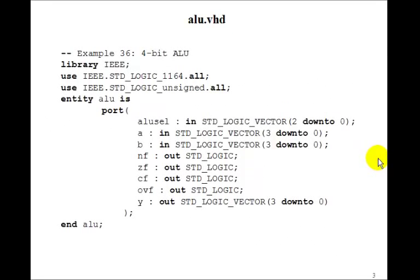Here is the VHDL program to do this. ALU select will be 3 bits, 2 down to 0. A and B are 4 bits, 3 down to 0. And then the outputs will be the negative flag, the 0 flag, the carry flag, the overflow flag, and Y output, 3 down to 0.